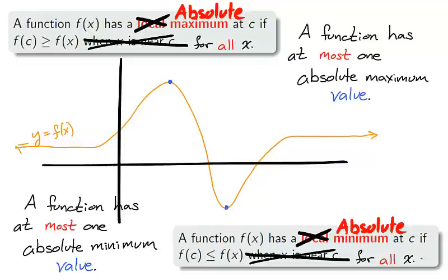As you would expect with the name absolute, a function has at most one absolute maximum value and at most one absolute minimum value. However, multiple points may attain these values.